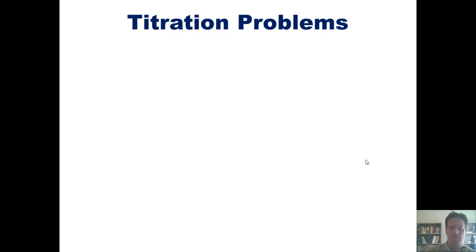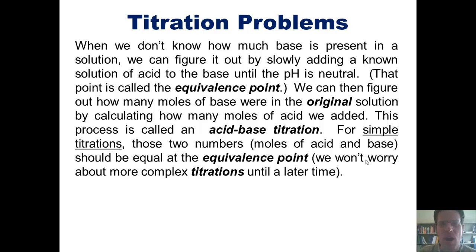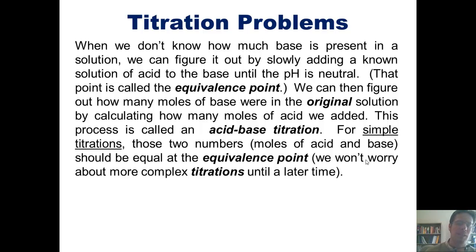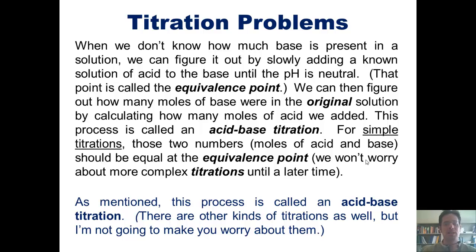We now turn to the subject of titration. Frequently we're in situations where we know a solution contains base, but have no idea how much. When we don't know how much base is present, we can figure it out by slowly adding a known solution of acid to the base until we reach neutral pH — pH 7.0. That pH level is called the equivalence point. At that point, we can calculate how many moles of base were in the original solution by counting how many moles of acid we added. This process is called an acid-base titration. For simple titrations, the moles of acid and moles of base are equal at the equivalence point.